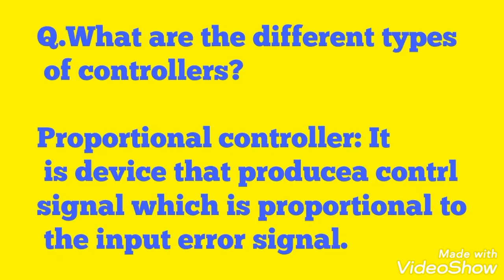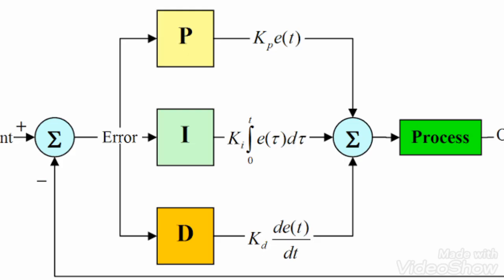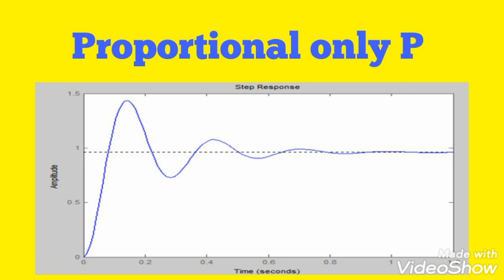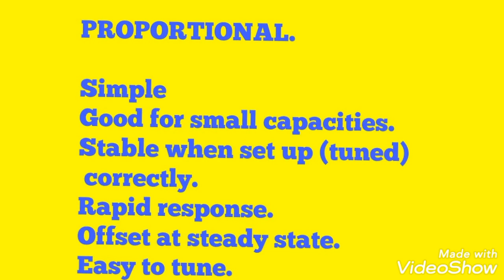What are the different types of controllers? The proportional controller is a device that produces a control signal proportional to the input error signal. If the input error is greater, the output will be higher; if the error is less, the output will be low. PID is an abbreviation for proportional, integral, and derivative. With only proportional control, there is much variation in the graph because as the output changes, the input changes accordingly.